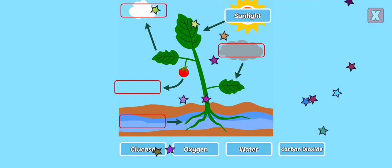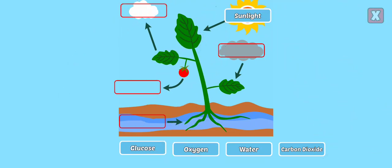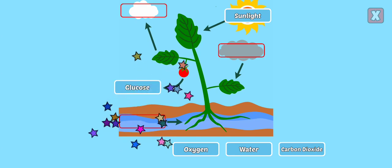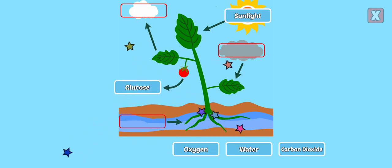Sunlight is absorbed by the green leaves of the plant. Glucose. Glucose is a form of sugar created through photosynthesis and is used as food for the plants.